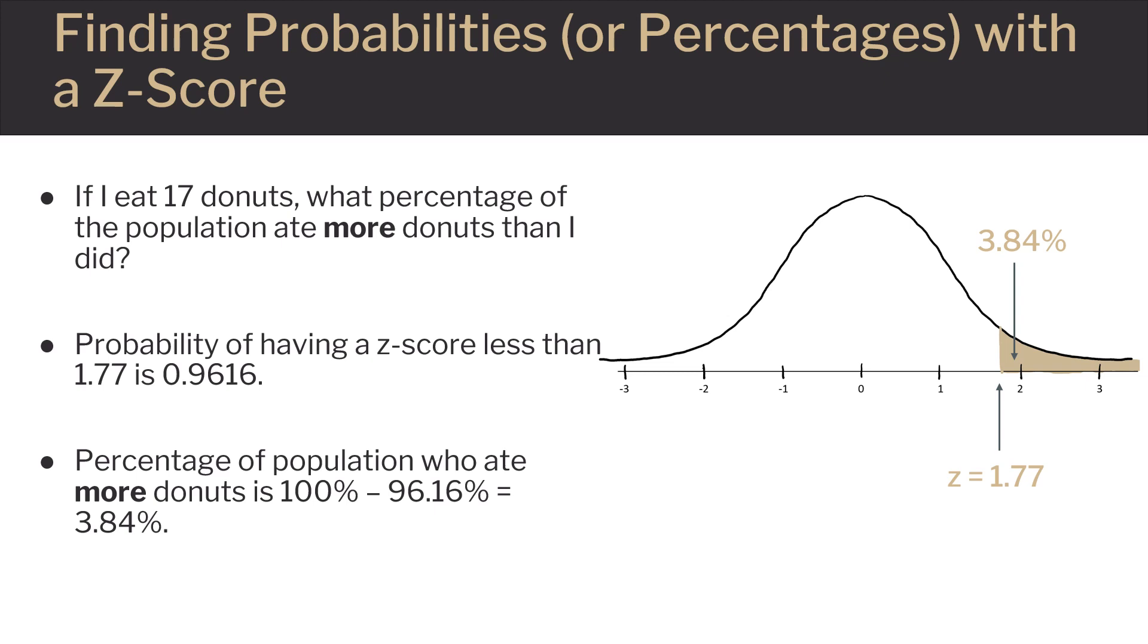But because I want the percentage of the population who ate more donuts is going to be 100% minus 96.16%, which equals 3.84%. You could also do 1 minus 0.9616 if you wanted your answer to be represented as a decimal.